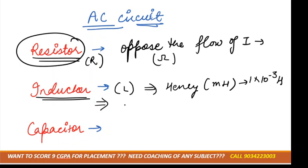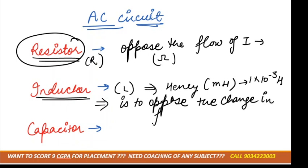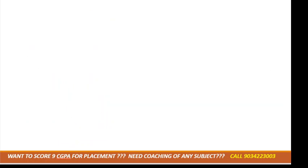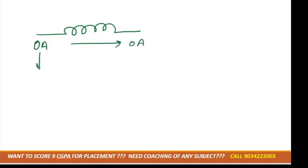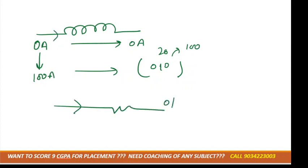The function of an inductor is to oppose the change in flow of current. An inductor won't allow sudden change — for example, if current is flowing at zero amperes and suddenly changes to 100 amperes, the inductor won't allow that instant change. It will gradually go from zero to ten to twenty, then to hundred. Unlike a resistor where output changes instantly, an inductor takes some time.